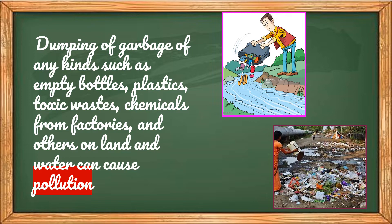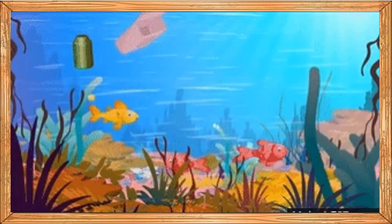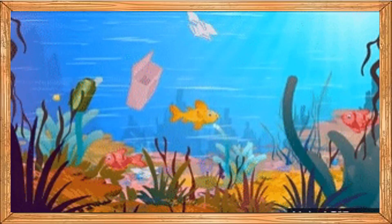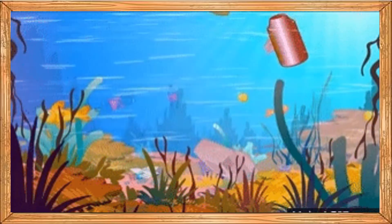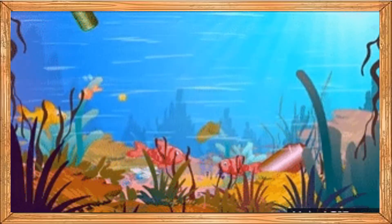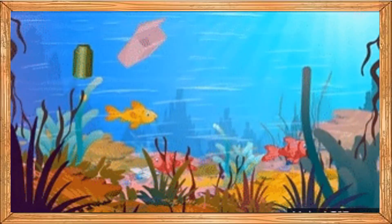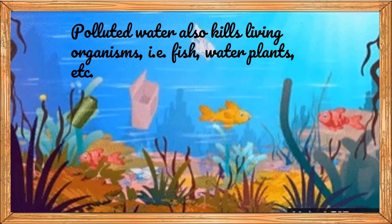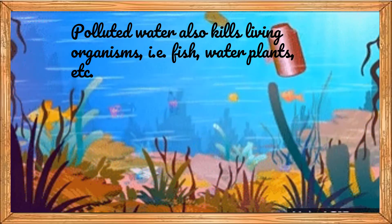Growing plants is also not possible in polluted land. When water in the river is dumped with garbage of any kind such as empty bottles, plastic, waste materials from houses, and industrial and chemical waste from factories, the river becomes polluted. If we drink water contaminated with germs, we are likely to get sick. Polluted water also kills living organisms such as fish, water plants, etc.